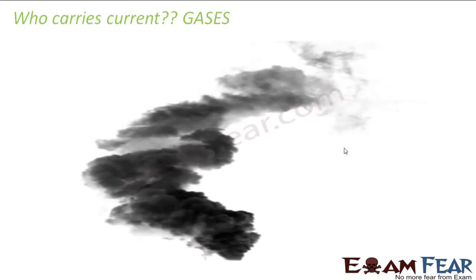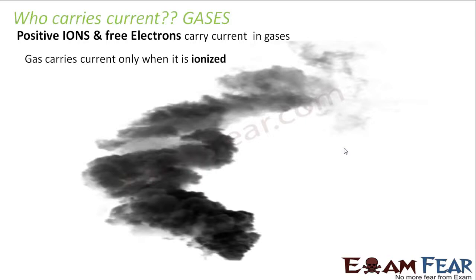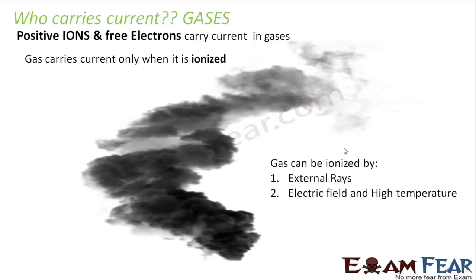Now let us consider gases. What happens in case of gases? In gases also, positive ions as well as free electrons carry current — that means it is a combination of both solids and liquids. Here we have free electrons, and at the same time there are some positive ions which carry current in gases. But gas carries current only when it is ionized, because only when it is ionized, ions are formed and these ions are then helpful in carrying current.